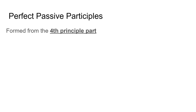They're formed from the fourth principal part. What I mean by that is when you open your dictionary and you find a verb you usually get four different parts. The first one is your first person singular, like 'I carry'. The second one is your infinitive, 'to carry'. The third one is the perfect tense, like portavi — that one is your perfect stem. And then you have your fourth principal part, which is your perfect passive participle.